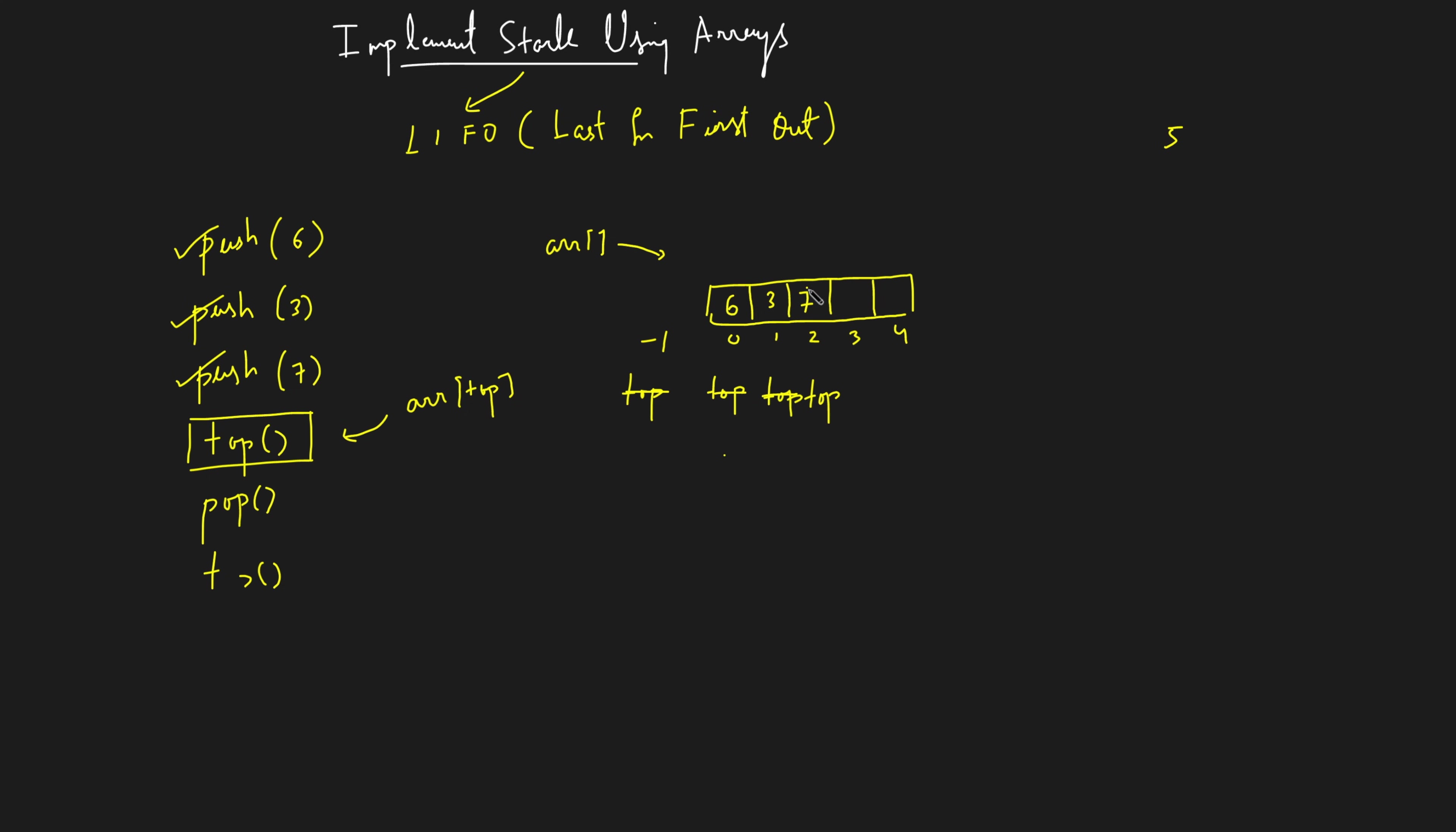Now if someone says pop, pop means the 7 no more exists, it has to be deleted. Now if you want to delete something, what you'll do is you'll take the top from the second index and you will reduce it by 1, so it will come to the first index. So this is how you will do a pop operation.